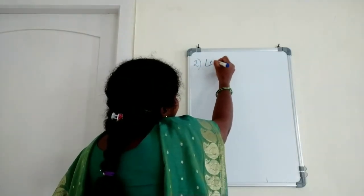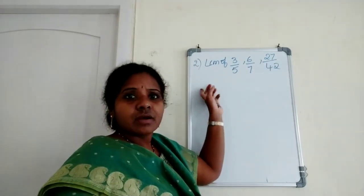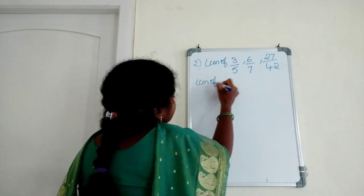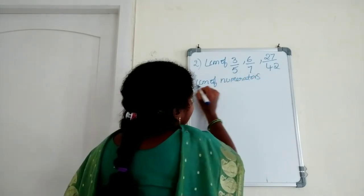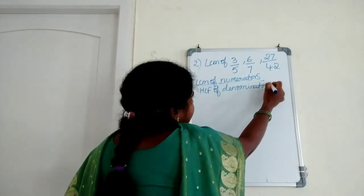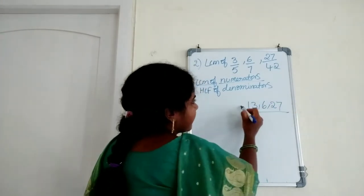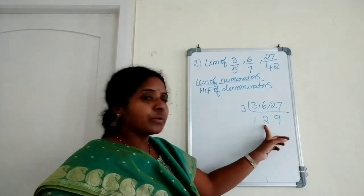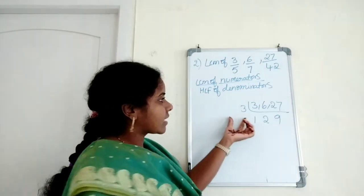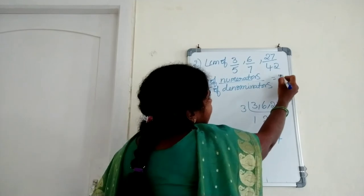Next question: find the LCM of 3/5, 6/7, and 27/42. The formula is LCM of numerators divided by HCF of denominators. Numerators are 3, 6, and 27. Using the short division method with 3's table: 3 divides into 3, 6, and 27. Since 2 and 9 are co-prime numbers, we multiply directly: 3 × 2 × 9 = 54. LCM of numerators is 54.